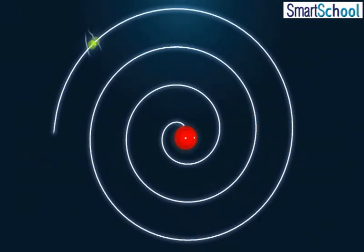Whenever a charged particle like an electron is revolving around a central force like that of the nucleus, it loses energy continuously in the form of radiations. Thus, the orbit of the revolving electron will keep on becoming smaller and smaller, following a spiral path.